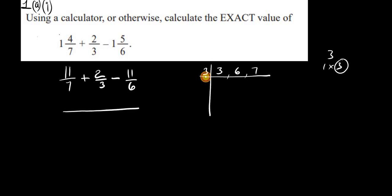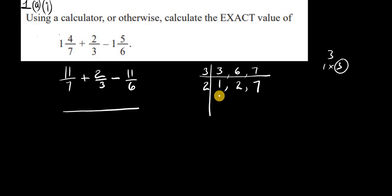We divide by 3: 3 into 3 gives 1, 3 into 6 gives 2. Since 3 cannot enter 7 without a remainder, we put back 7. Since we have a 1 from dividing 3, we don't need to use it again. Next we divide by 2: 2 into 2 gives 1, and we put back the 1 and 7. We're left with 1, 1, and 7, so we use 7.